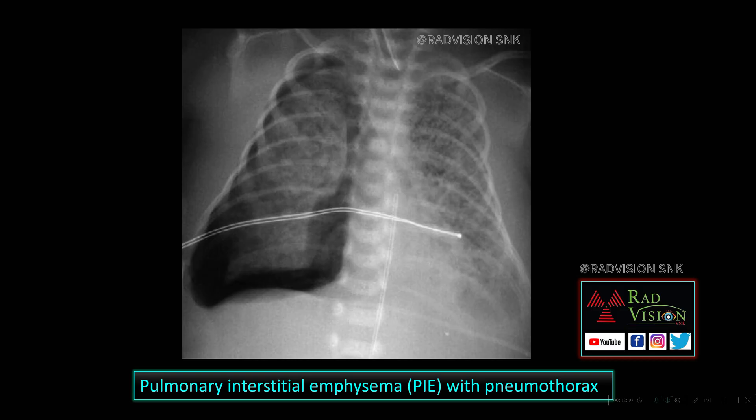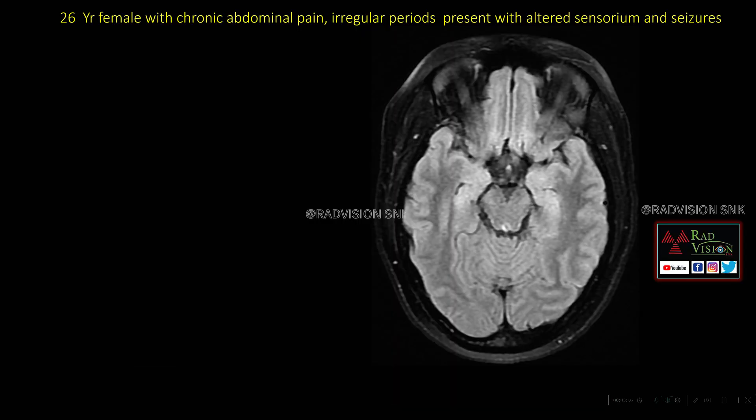In this case, pulmonary interstitial emphysema is complicated with pneumothorax. Other complications to remember are pneumothorax, pneumomediastinum, bronchopulmonary dysplasia, transient tachypnea of the newborn, and sometimes white-out lungs. These are the common complications to remember in respiratory distress or hyaline membrane disease.